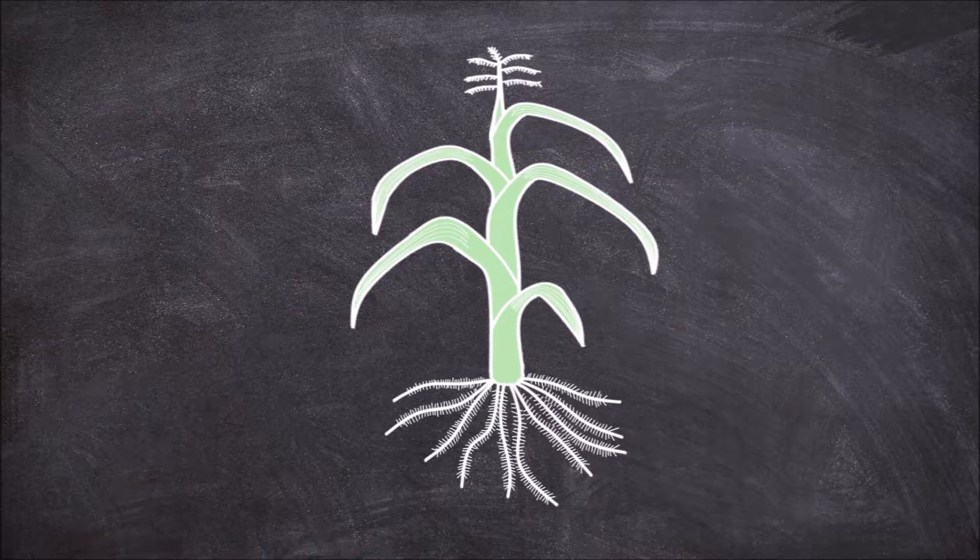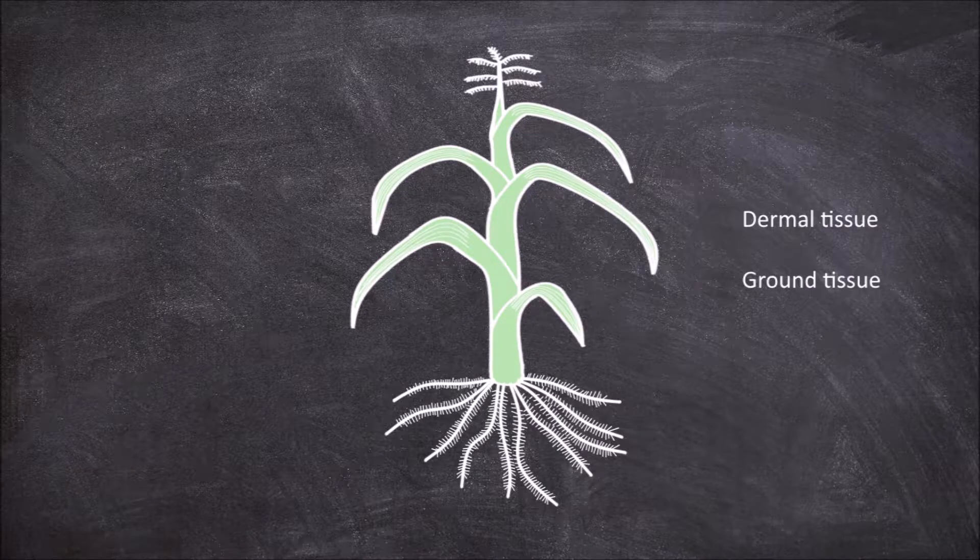Within the root there are three types of tissue: dermal, ground and vascular tissue.